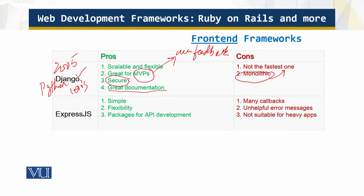Next we have Express.js. Its main strength is simplicity — it is an open source framework with a great number of out-of-the-box tools, and many solutions can be built with just a couple of lines of code. It has good packages for API development. However, its error messages are not very helpful, and that same simplicity becomes a weakness: it is not suitable for heavy applications.